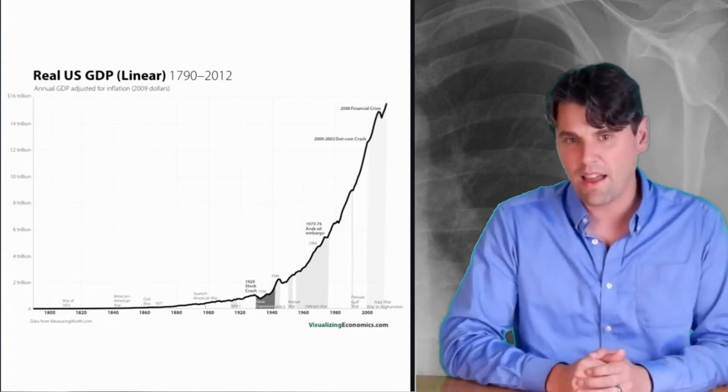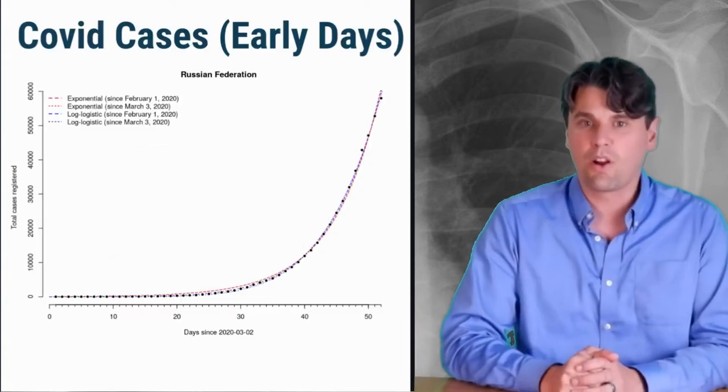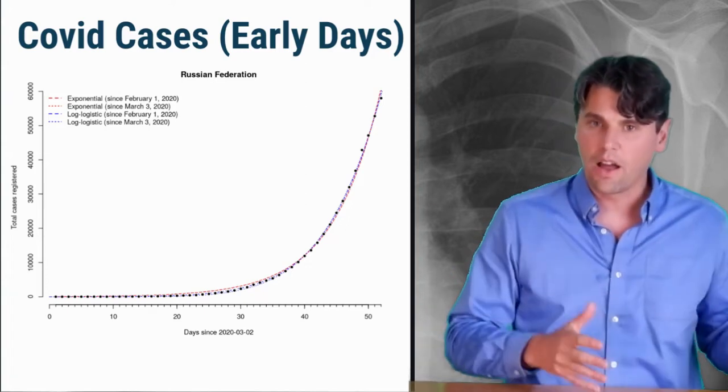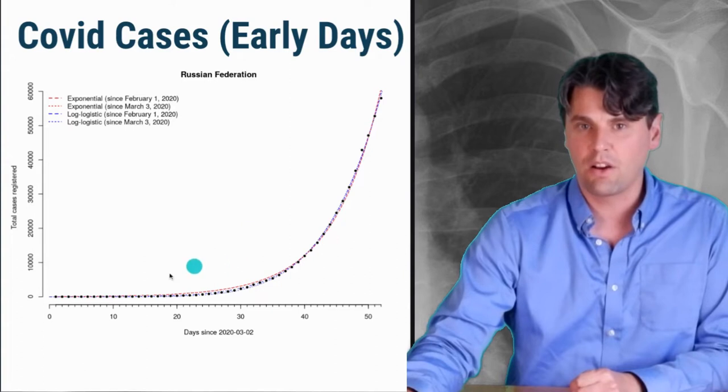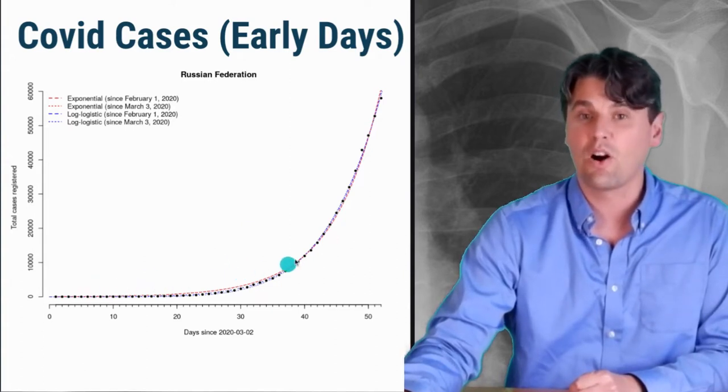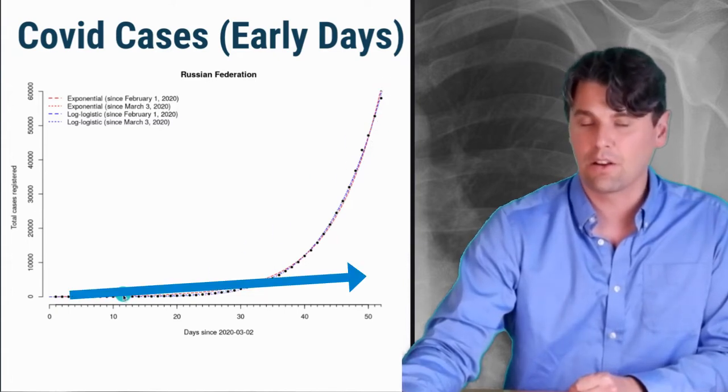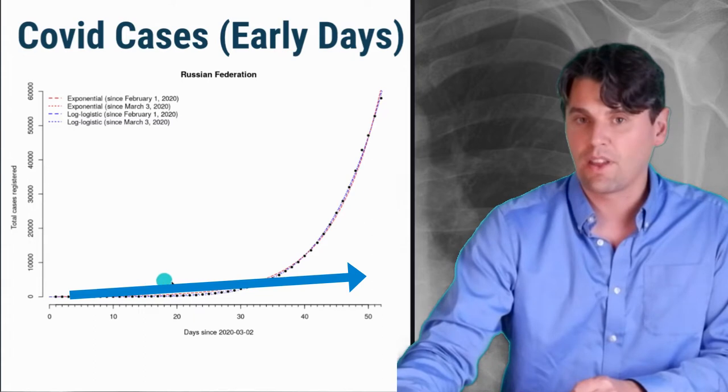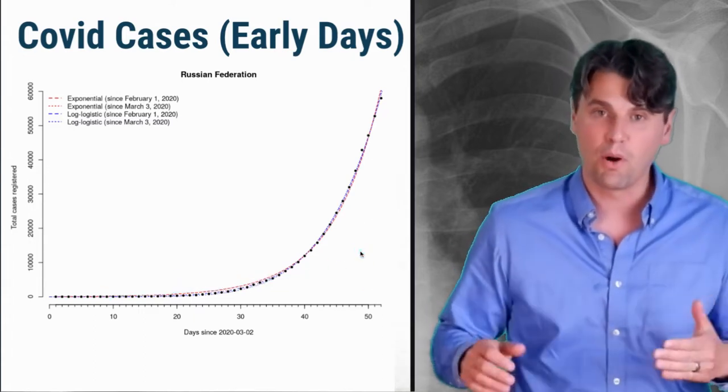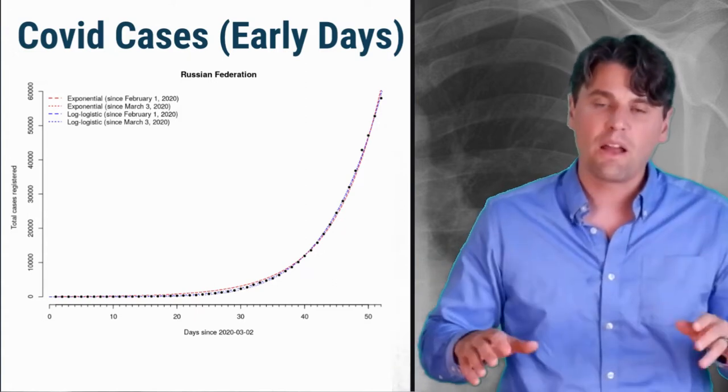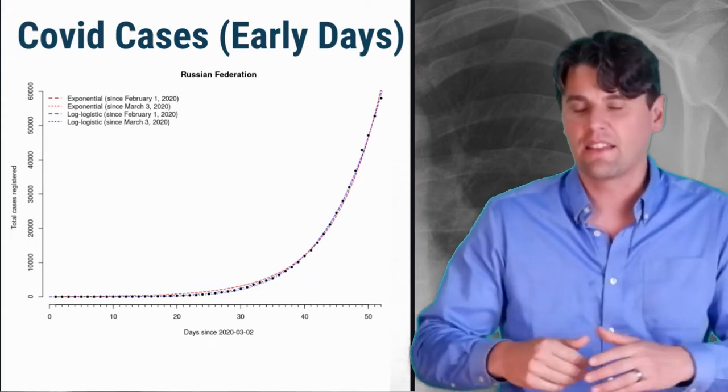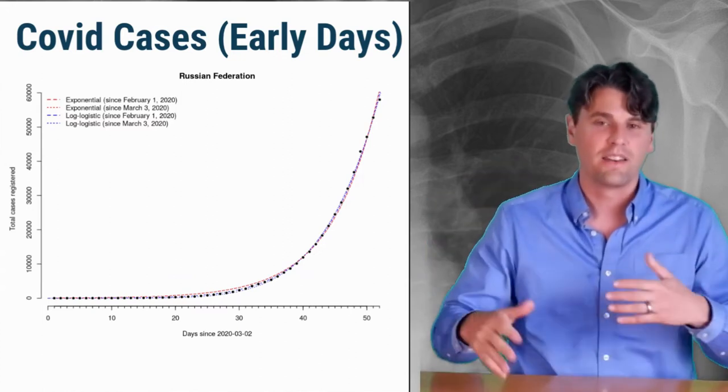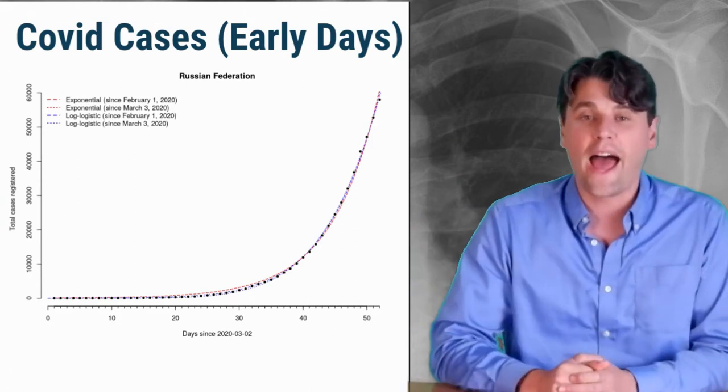If you look at the number of COVID cases in the early days, this is data from Russia. You can see there's very good agreement between the number of cases and what's called an exponential function. If something is growing linearly, it grows in direct proportion to the number of days - that's essentially the slope of a line. But when something's growing really quickly, as in the case of early COVID, essentially every day there were twice as many cases as the day before. This growth is what we call exponential.